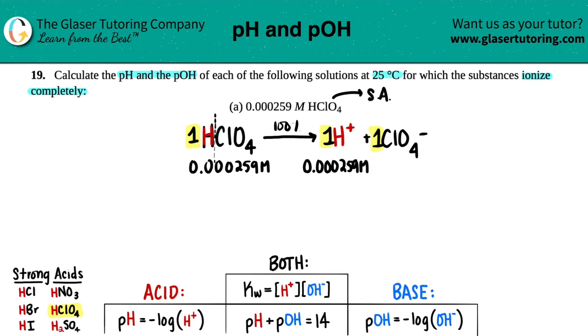And if I wanted to find the perchlorate, the ClO4, it's also a one to one. So it's going to be the same number as well, 0.000259 molarity. And I just want to make sure, okay, there's three zeros after, so we're good. And it's 259. Okay, perfect.